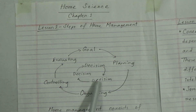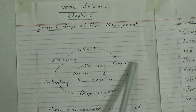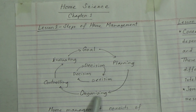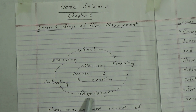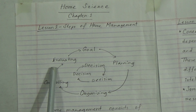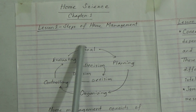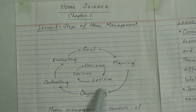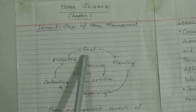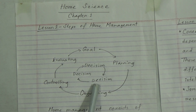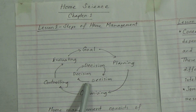We need to go through these steps to reach our goal and make a final decision. First is planning — to reach our goal we need to make plans. Then we organize activities according to those plans. After organizing, we control and check if everything is going okay. At the fourth step, we evaluate the progress and see if we reached our goal. If the goal is not achieved, the process can be repeated.